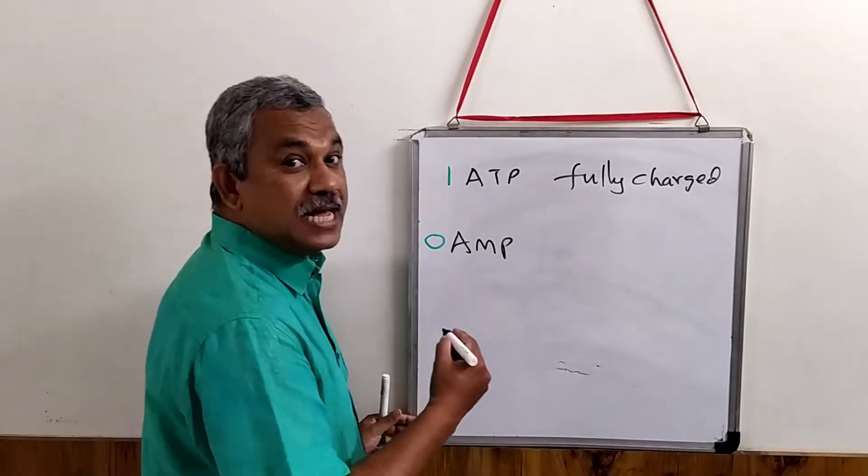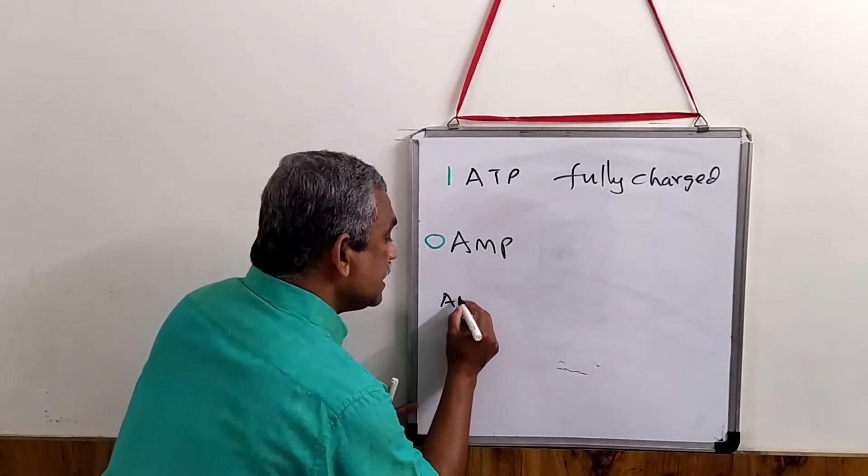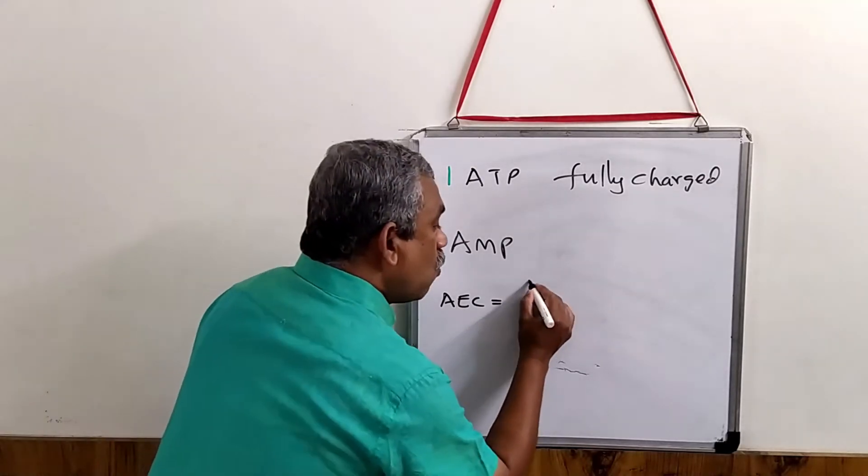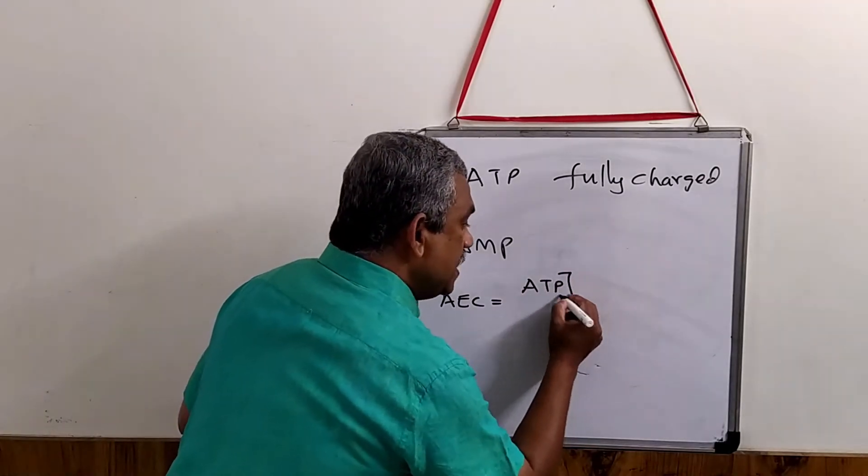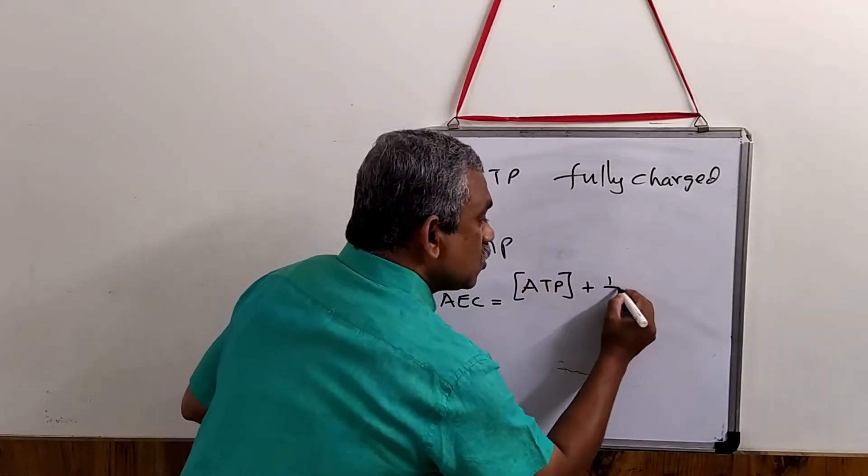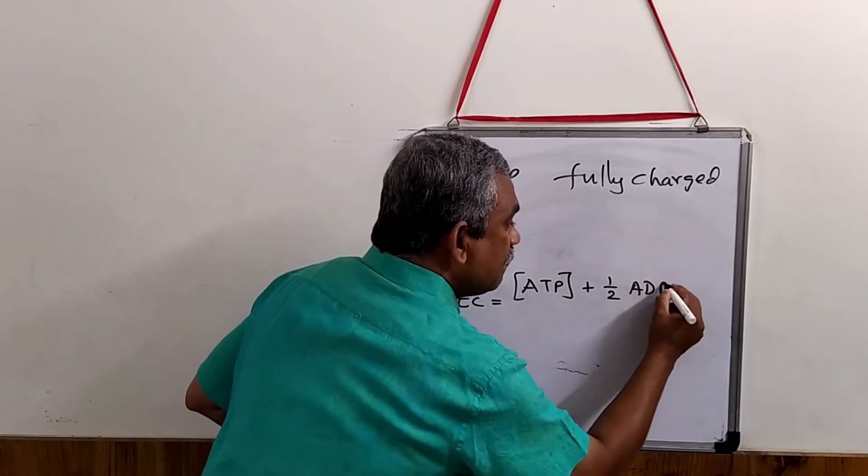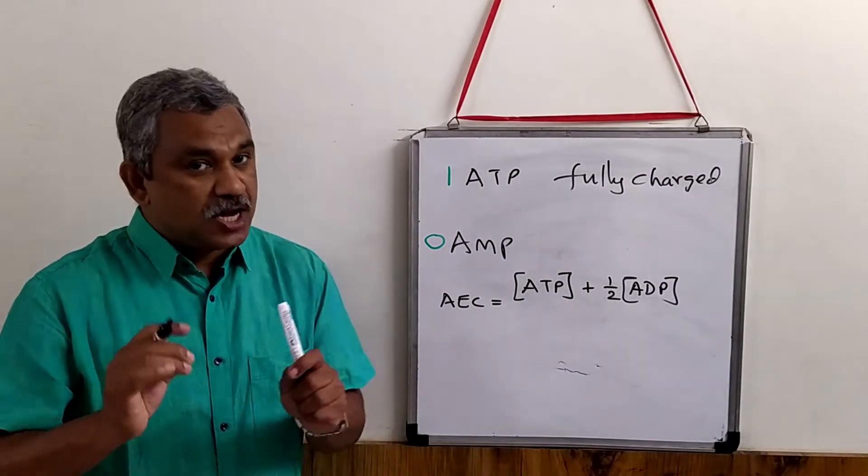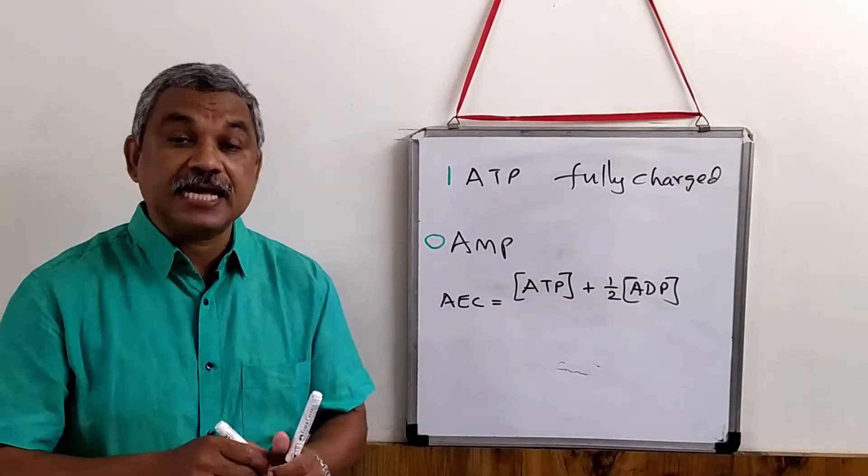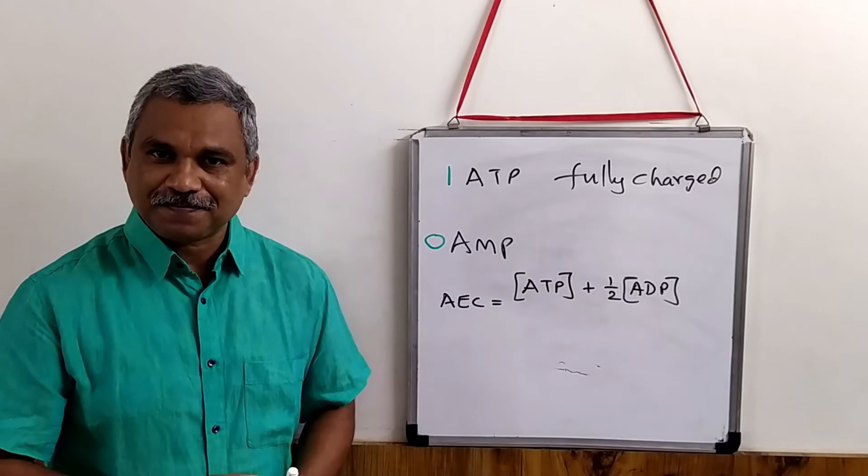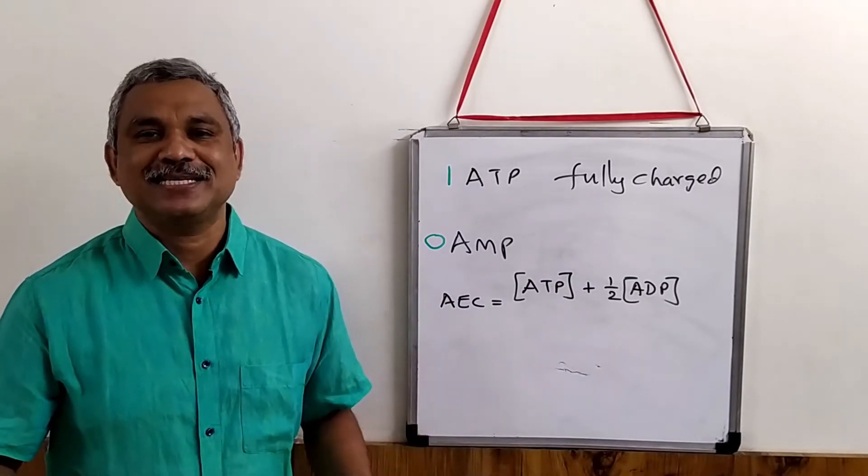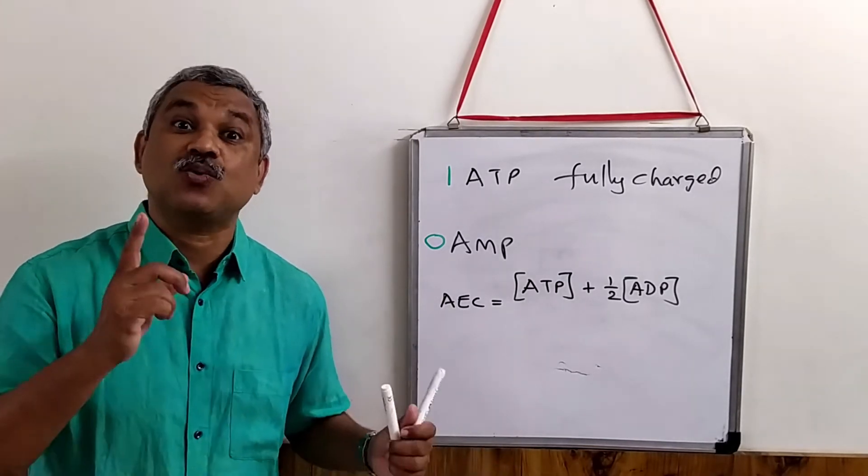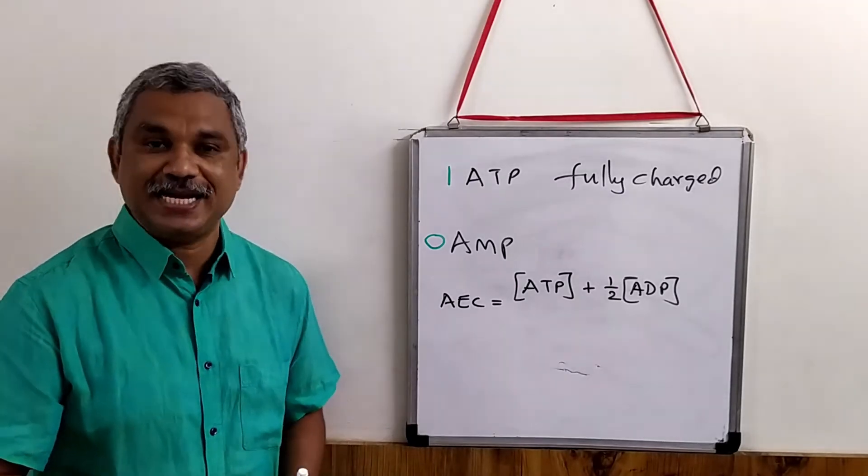There is a very simple formula given by Daniel Atkinson. And that formula says, adenylate energy charge is equal to the concentration of ATP plus the concentration of half ADP. Why half ADP? Because an ATP has two phosphoanhydride bonds, and ADP has half of it, that it has only one phosphoanhydride bond.